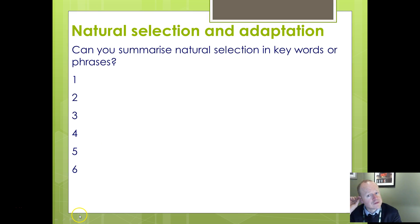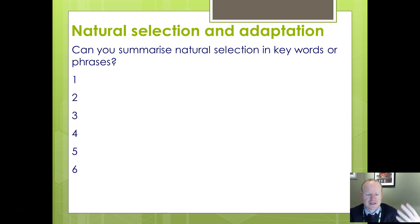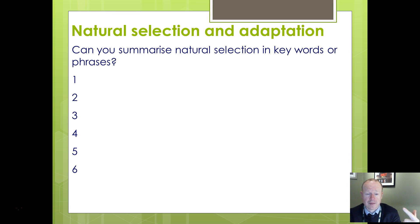Just want to pause for a moment. Can you think about summarizing natural selection in six keywords or phrases? Pause and have a go and see if you can think about the six keywords that might summarize this process.